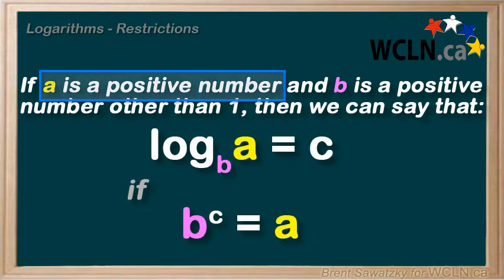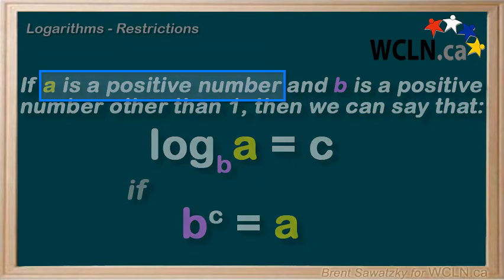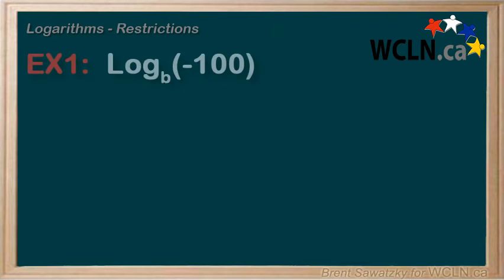First, a is a positive number. Let's analyze that. Example 1, log base b of negative 100. Well, this looks easy enough. Let's assume that b is 10 and just plug this into our calculator.